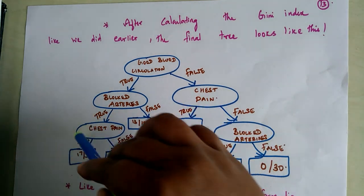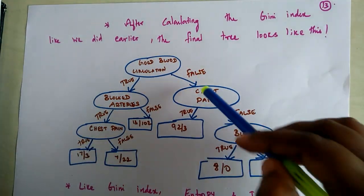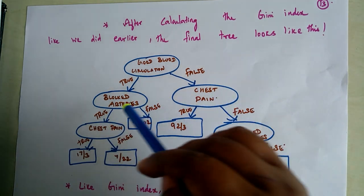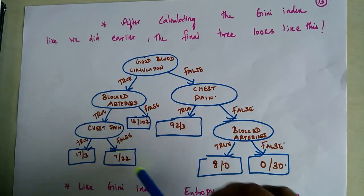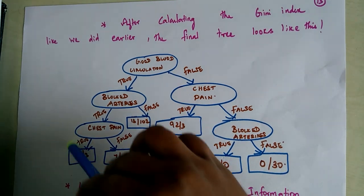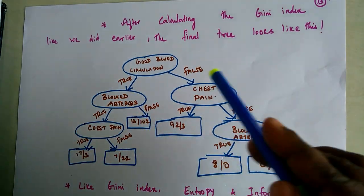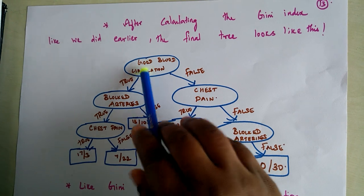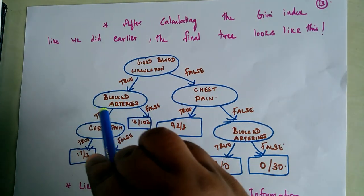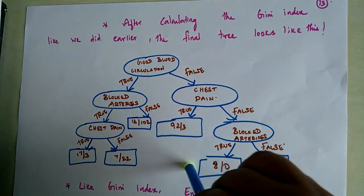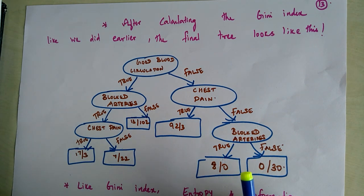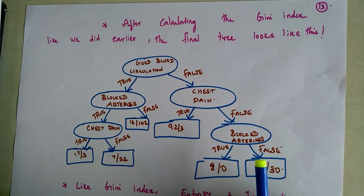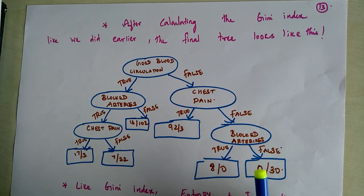The decision tree is built using the training data by arranging input attributes and split points based on their Gini index. Once training is complete, during testing we simply travel down the branches to make a prediction on whether a particular patient has heart disease or not. This concludes the decision tree CART model using the Gini index cost function.